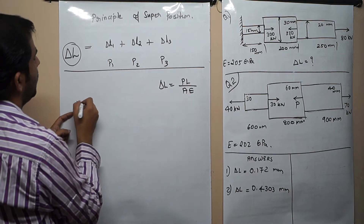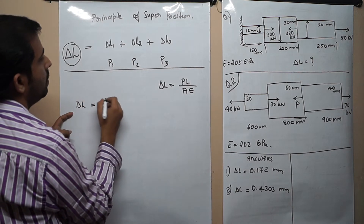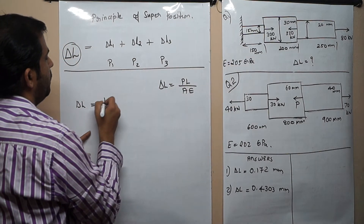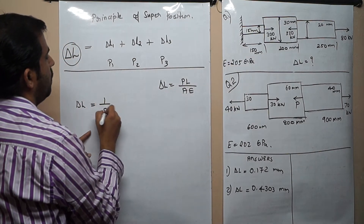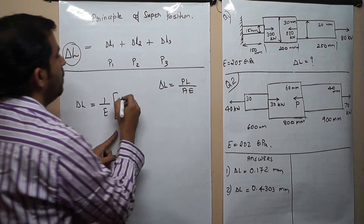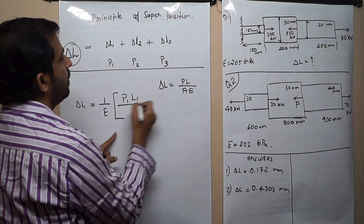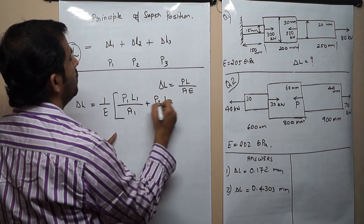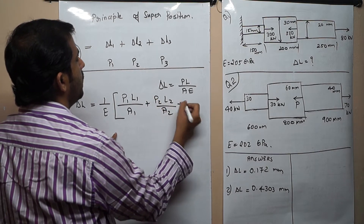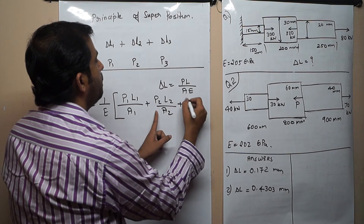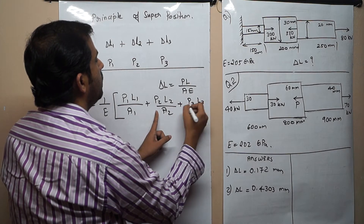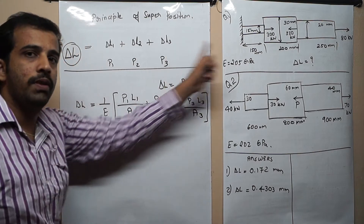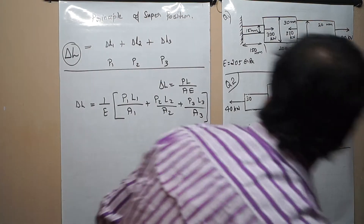From the superposition principle we can write delta L equals (1/E) times [P1·L1/A1 plus P2·L2/A2 plus P3·L3/A3]. This is our equation for solving that problem.